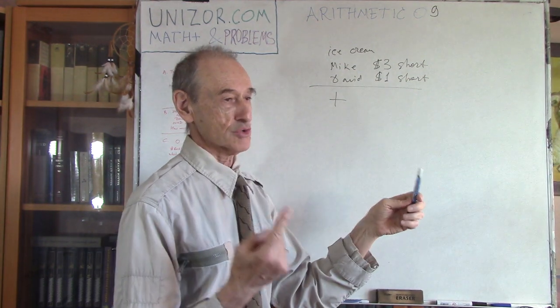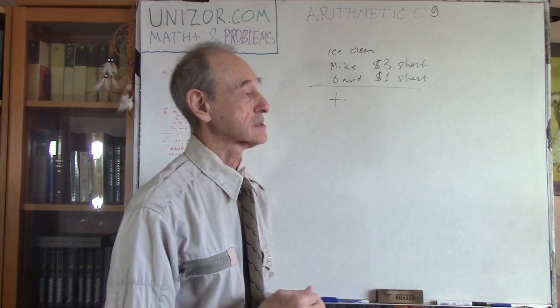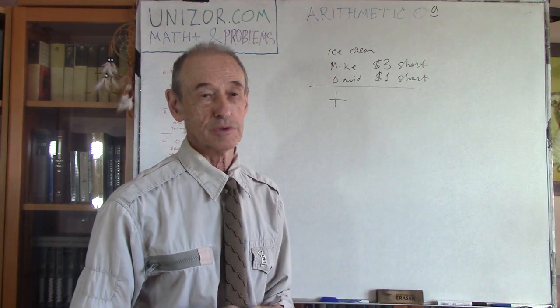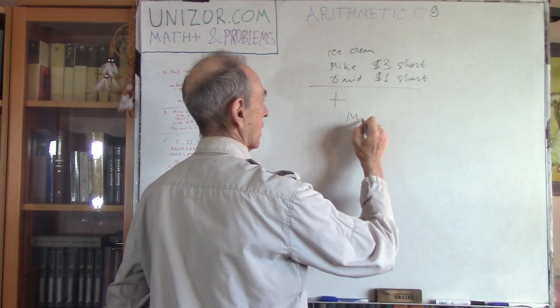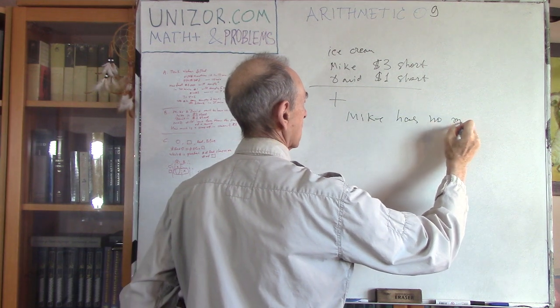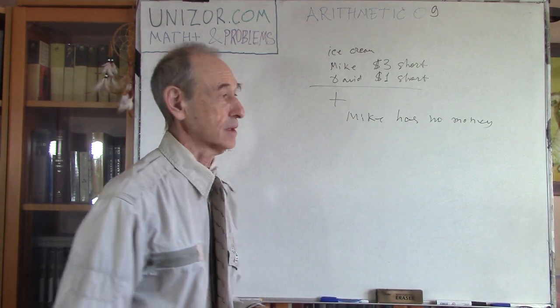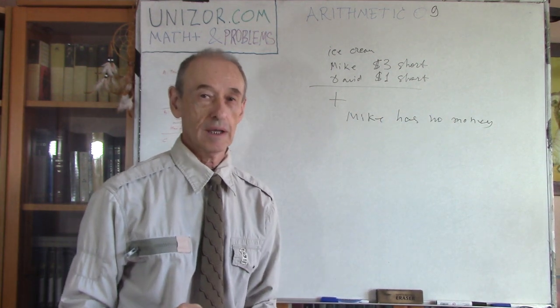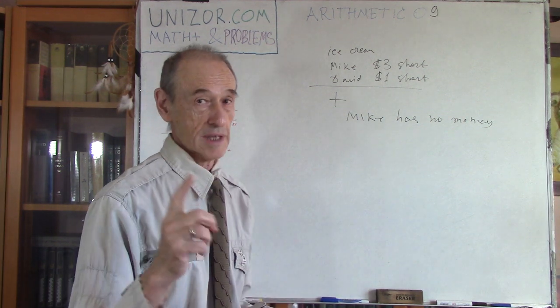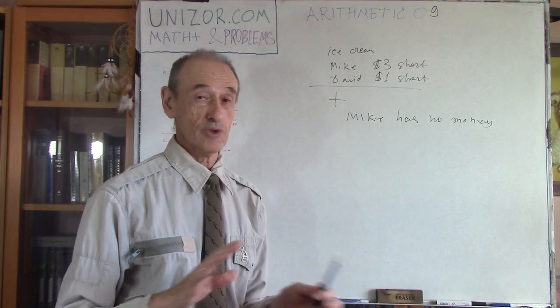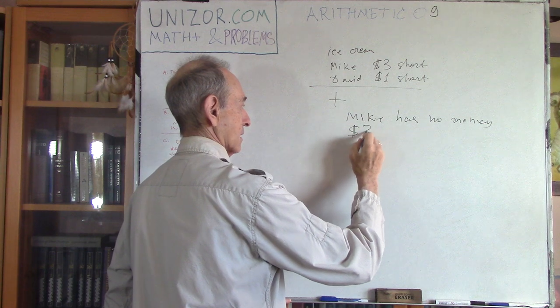David is only one dollar short. And if Mike has something, a certain number of dollars, it will be at least one, right? We're talking about whole dollars. Well, that would compensate and they will be able to do it. But I'm saying that they are not. They are still short. What does it mean? It means that Mike has no money at all. That's the consequence from the fact that even combined amounts of money was not sufficient. However, the next information is, he is three dollars short. He has no money and he is three dollars short. It means that scoop is how much? Three dollars. Exactly. That's the answer.